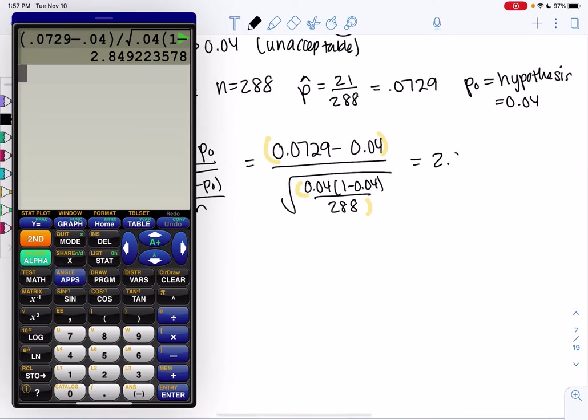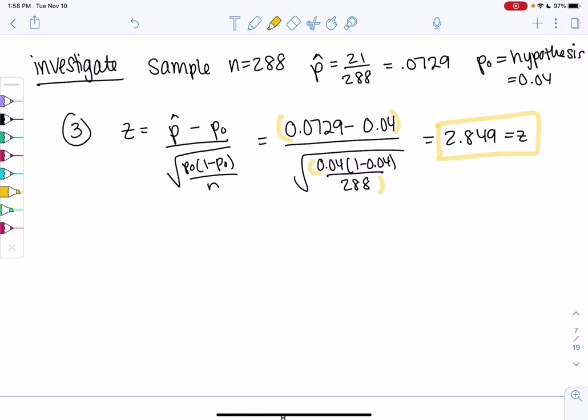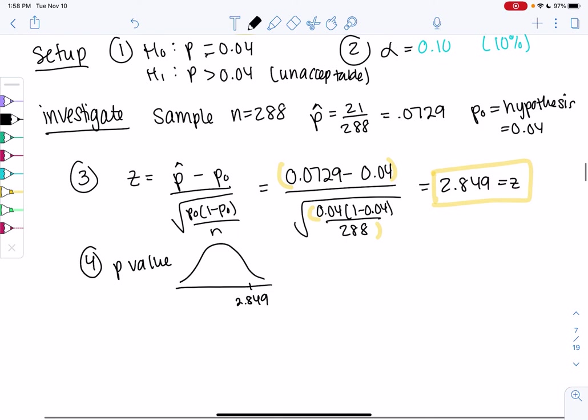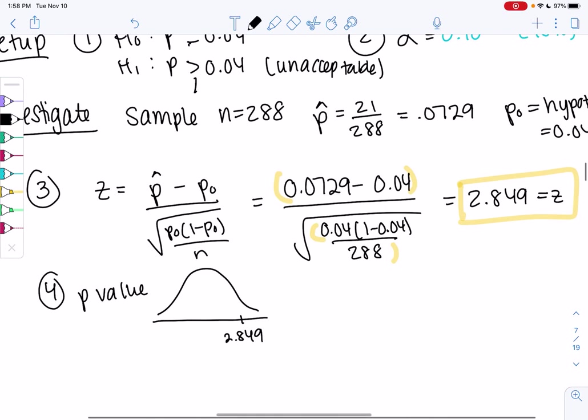This is probably strong evidence because it's more than two standard deviations. But the hypothesis test is actually going to go a little farther and measure the risk. It's probably strong evidence because of that Z-score, but now we're going to measure risk. That's this new thing called the P-value. We're going to draw the normal curve, label the Z-score at 2.849, and then since we're doing a right-tailed test for greater than, we're going to shade to the right and find the area.